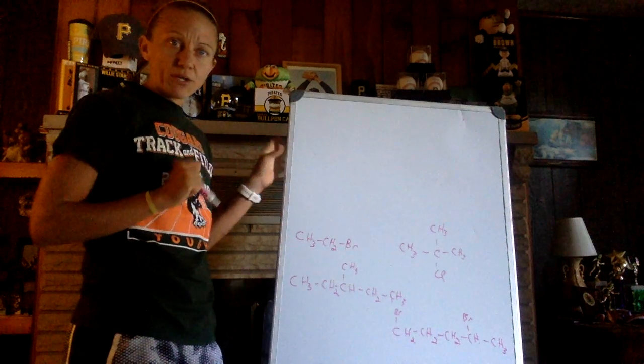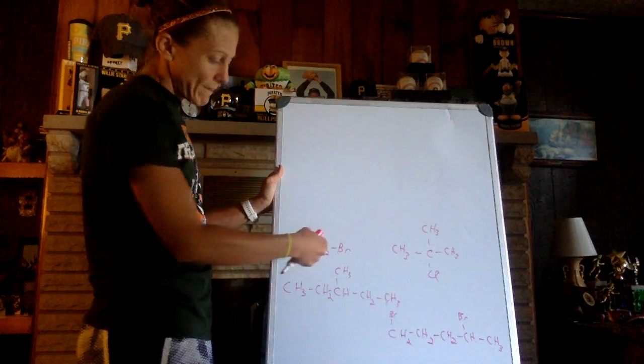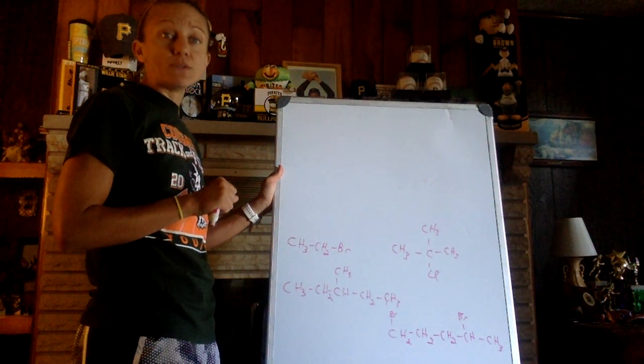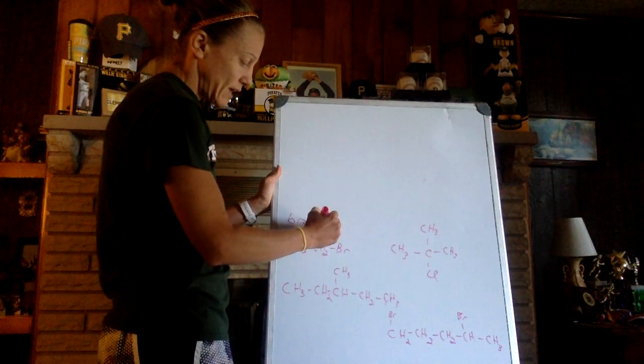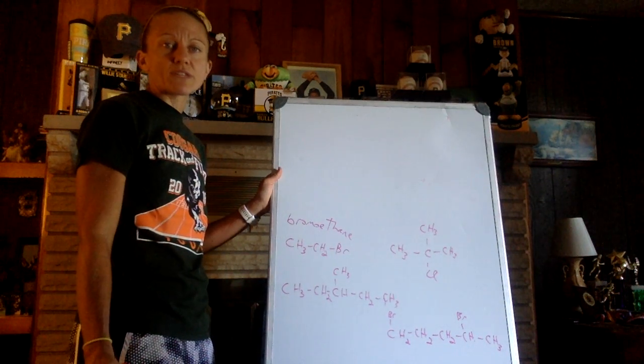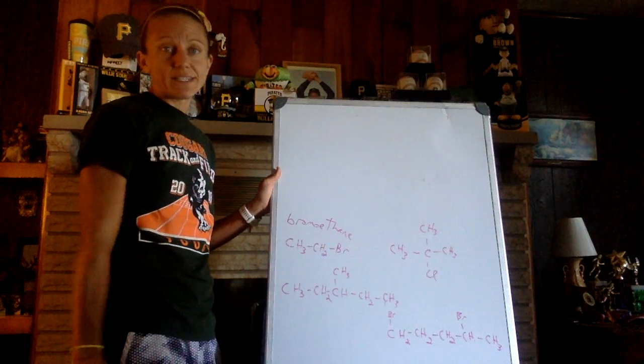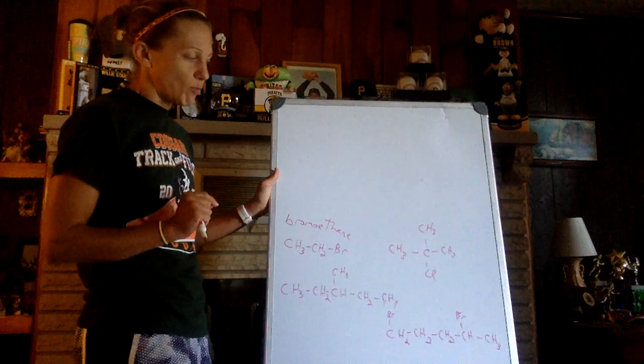So this one, how many carbons do I have? Two carbons. One, two. A bromine on one of them. If you have two or less carbons, you don't need to use a number. We would call this bromoethane. Organic has a lot of picky rules like that, like why not call it 1-bromo? Well, because either way it's on the end of the chain. So for methane and ethane, we don't need a number if we only have one thing on it.